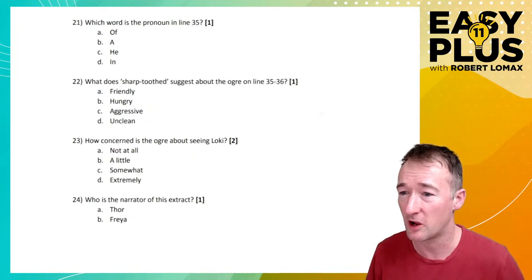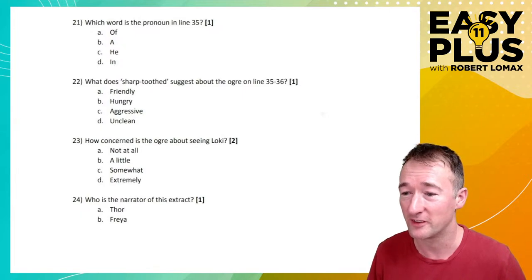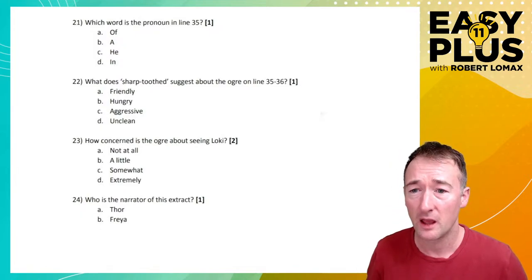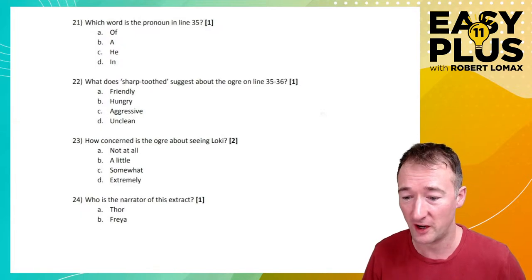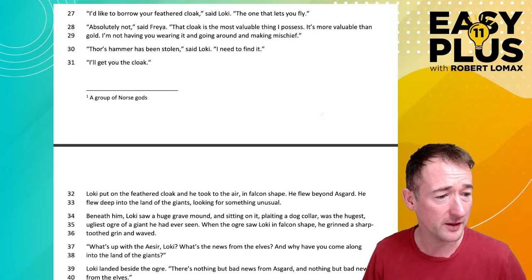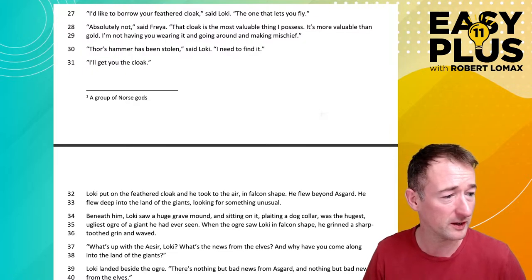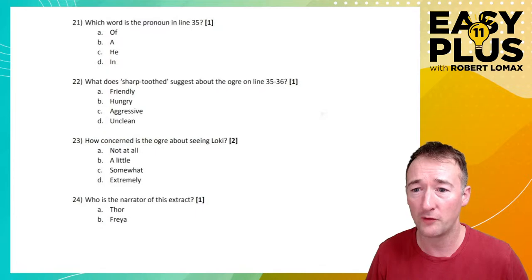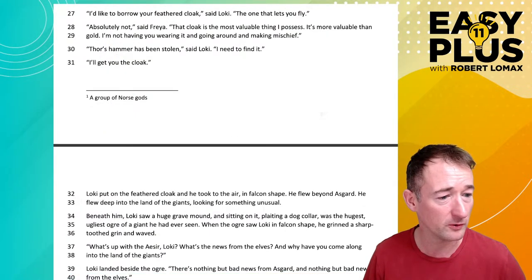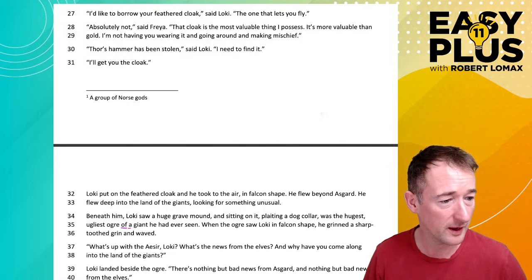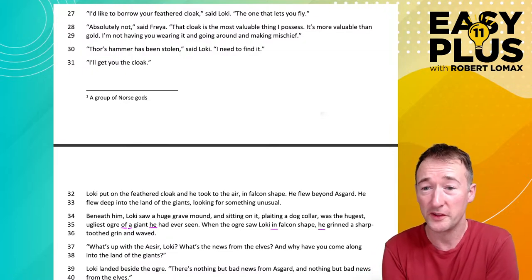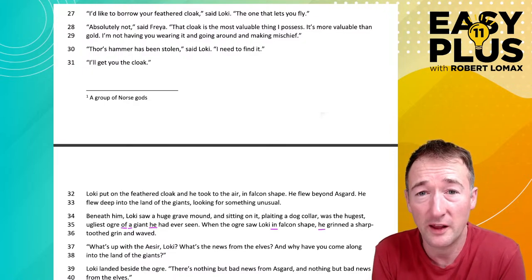Okay, so let's have a go. Hello to everybody in the comments. Precious jewellery, do you know the values of an urban egg? Okay, I think this is cryptic young person talk that I will not seek to understand. Let's move the microphone back a bit. That's a little bit better. Okay, which word is the pronoun in line 35? Let's go and have a look at line 35. The ugliest ogre of a giant he had ever seen when the ogre saw Loki in falcon shape. I never did decide whether it was Loki or Loki, so I just switched between the two capriciously.